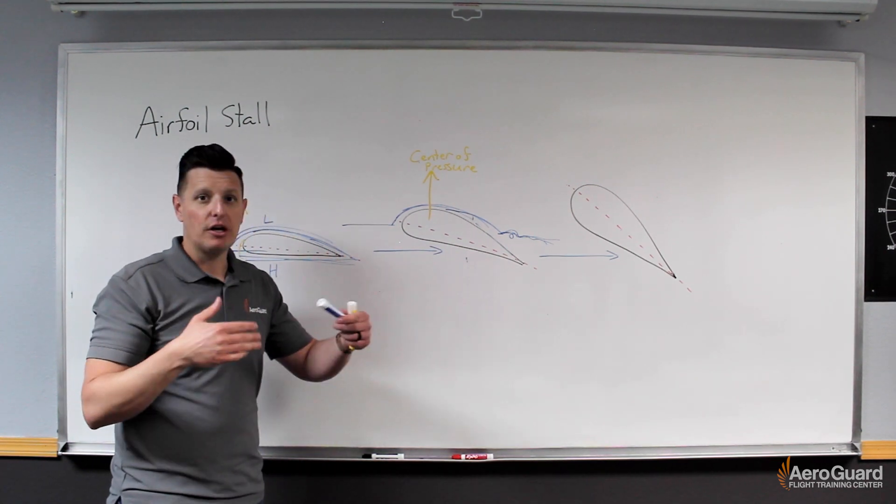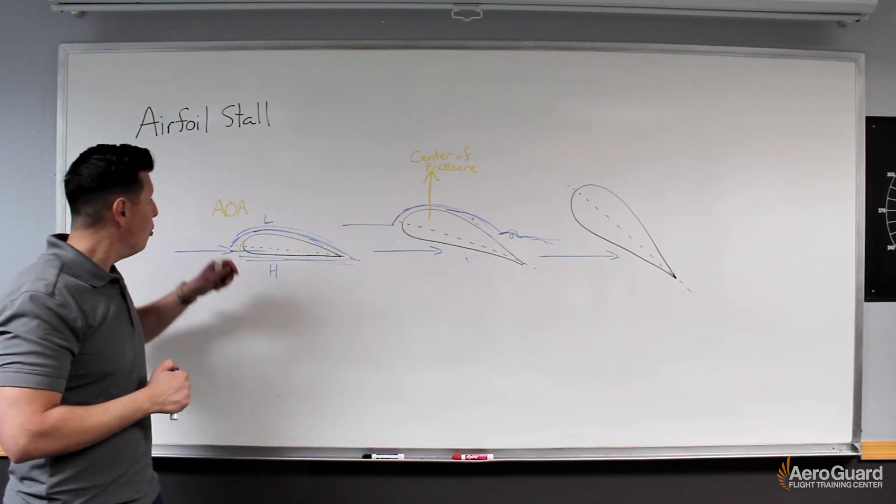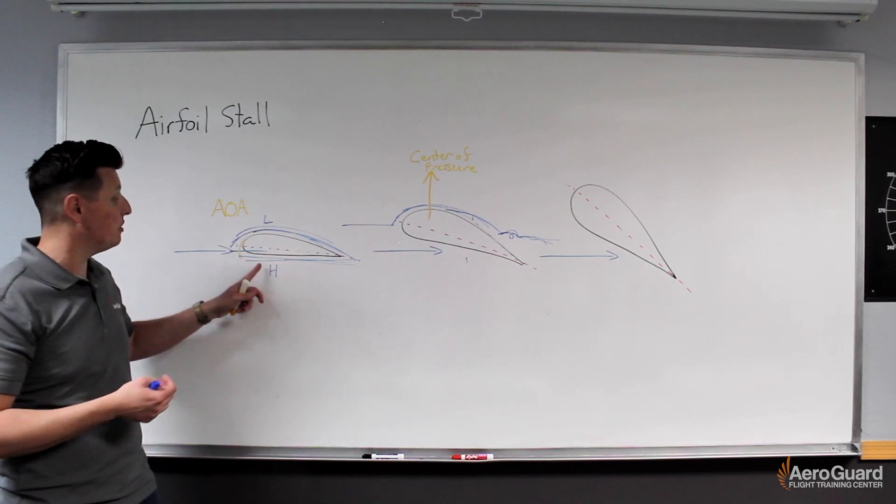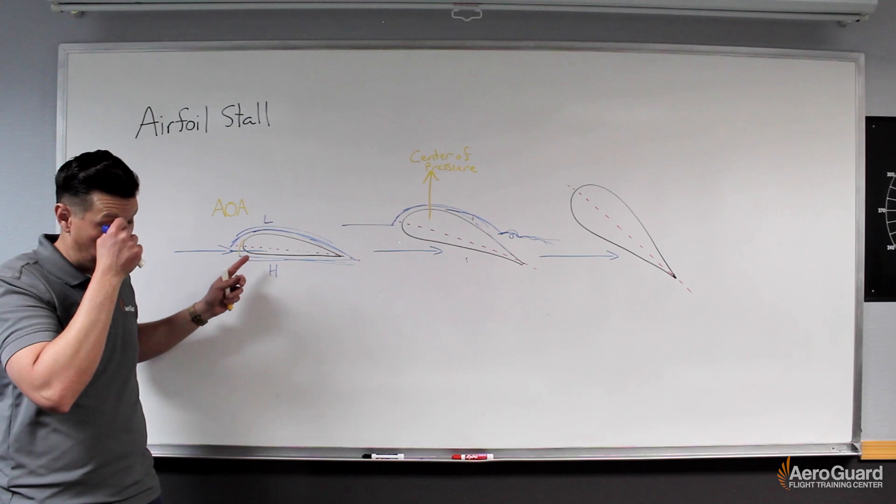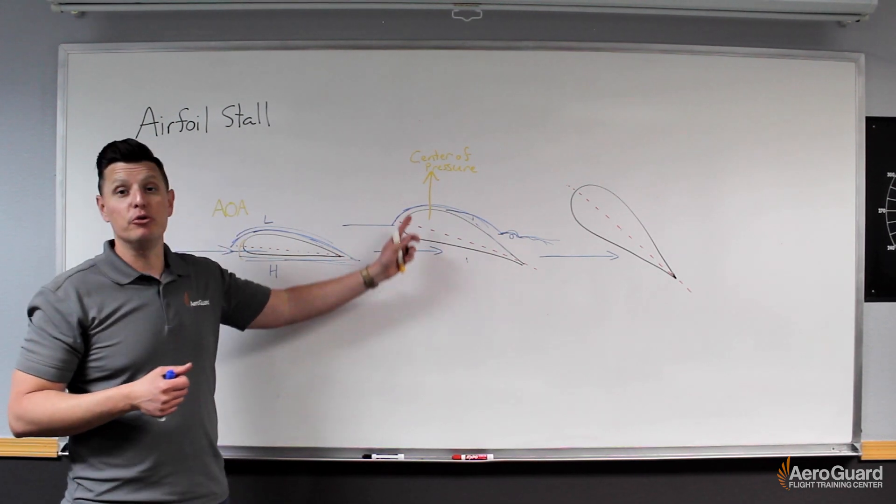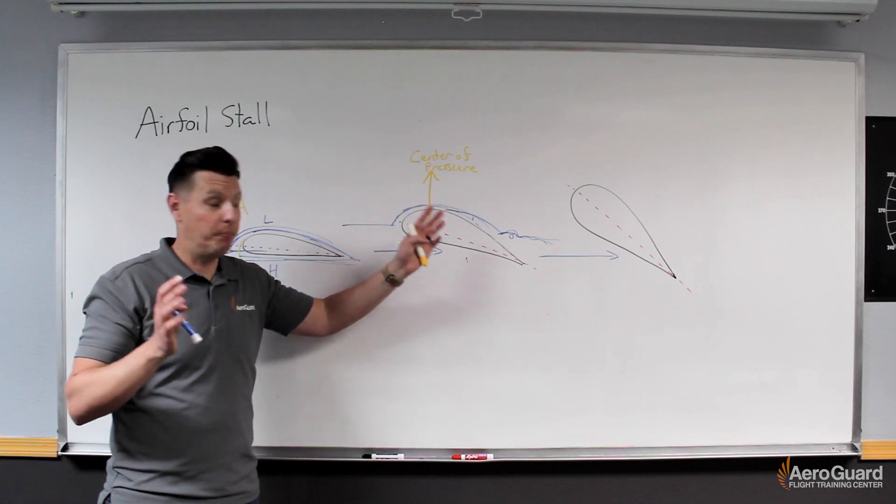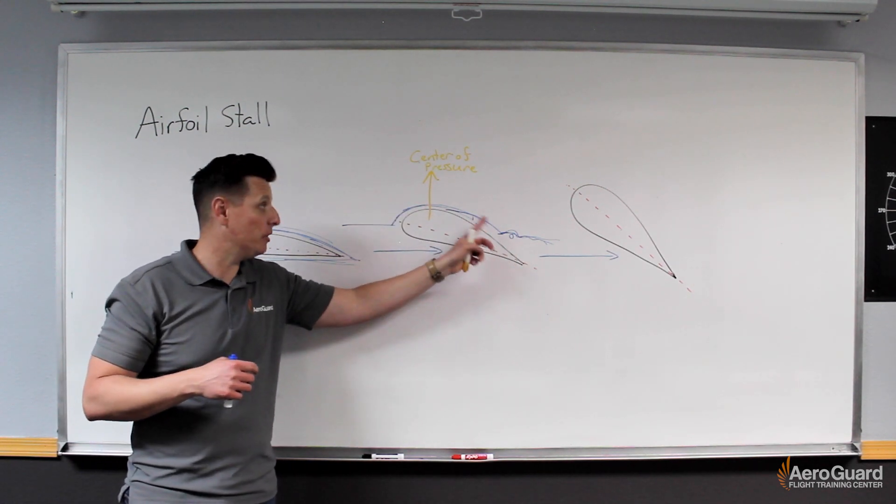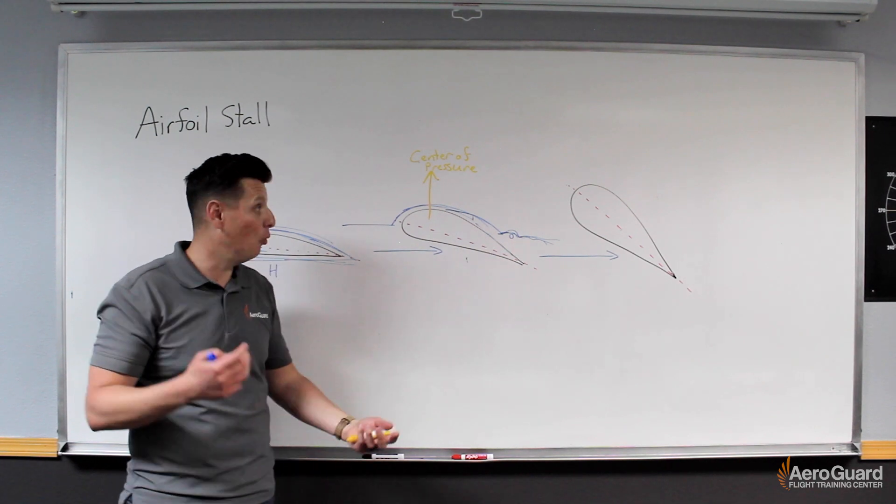As we increase the angle of attack more and more, this separation point is just going to continue to work its way forward. We understand that the angle of attack is associated with the pressure difference between the top and the bottom of the wing. Therefore, if I increase my angle of attack, I'll produce more lift.